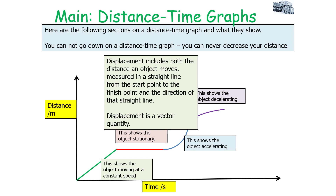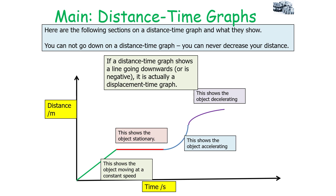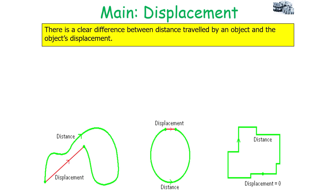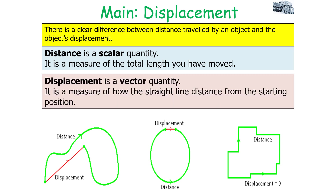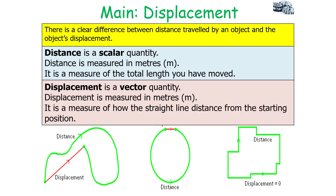Displacement includes both the distance an object moves, measured in a straight line from the start point to the end point, and the direction of that straight line — making it a vector quantity. There is a clear difference between distance and displacement: distance travelled is a scalar quantity measuring the total length moved, whilst displacement is a vector measuring the straight-line distance from the starting position. Both are measured in metres.